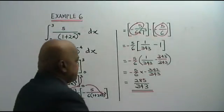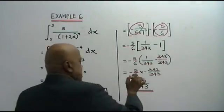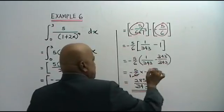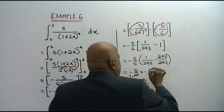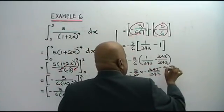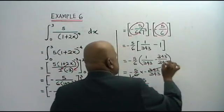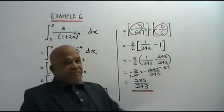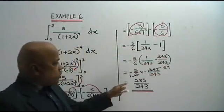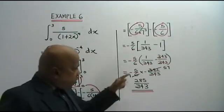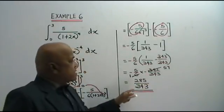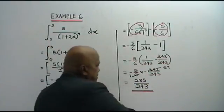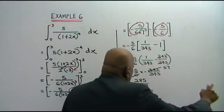Now we cancel. This is 1 time, this is 57 times. 5 times 2 is 285 over 343. This is your answer.